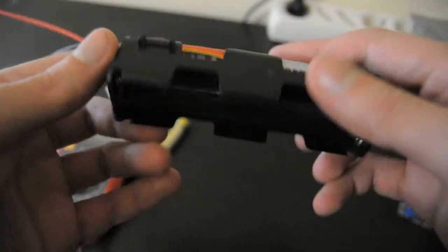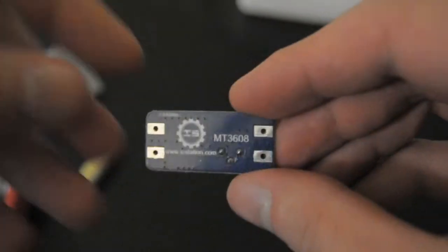What we need is a battery holder and a cheap $1 MT3806 DC boost converter that is widely available.